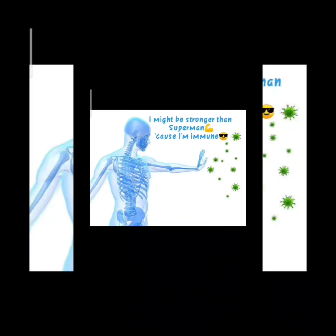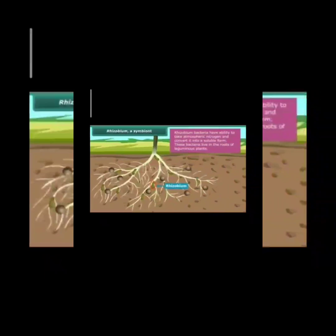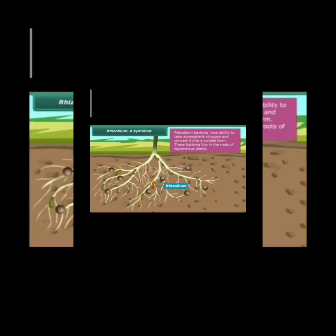There are certain microorganisms which help in increasing soil fertility. Some microorganisms present in the soil can fix nitrogen gas from the atmosphere to form nitrogen compounds. These nitrogen compounds mix with the soil and increase its fertility. For example, some bacteria and blue-green algae are able to fix nitrogen gas from the atmosphere. Rhizobium bacteria is one such bacteria, present in the root nodules of leguminous plants, which fixes nitrogen and increases soil fertility.